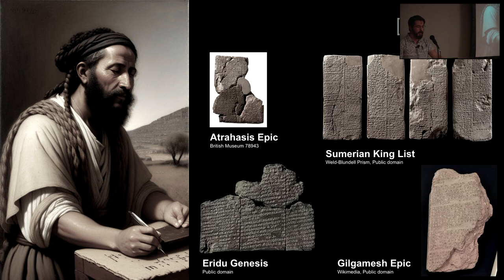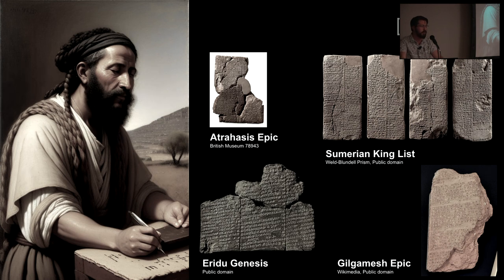To be even more specific, we're going to focus largely on Genesis 1 through 11. The four texts usually brought up in that conversation are these four Mesopotamian/Babylonian texts: the Atrahasis epic, the Sumerian king list, the Eridu Genesis, and the Gilgamesh epic. Those are the main texts we're talking about.